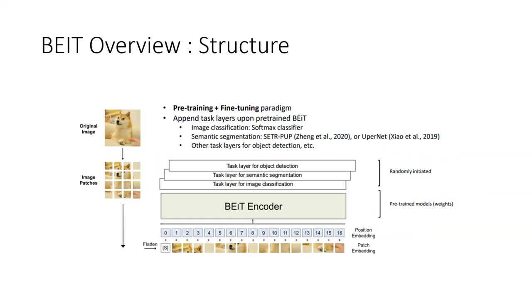Once we have trained the BEIT encoder, we fine-tune the model. The fine-tuning can be any layer. You can have an image classification layer which is a softmax classifier, or semantic segmentation, or task layers, or object detection. The BEIT encoder takes in inputs just like a normal transformer, flattened patches, and the task layer is randomly initialized and the pre-trained weights are fed into the BEIT encoder.